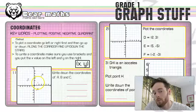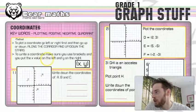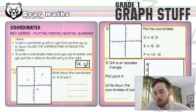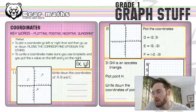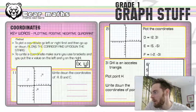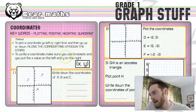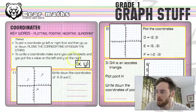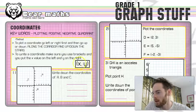The method is to plot a coordinate go left or right first. Always do the movement on the horizontal first and then go up or down the stairs. So then the vertical. You probably learned along the corridor and up or down the stairs at some point. To write a coordinate make sure you use brackets and put the x value on the left and the y value on the right. Demonstrated by this little graphic here.